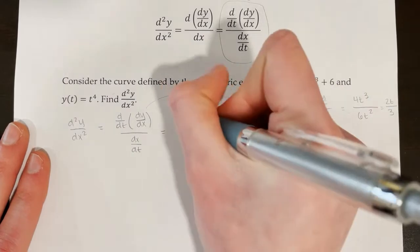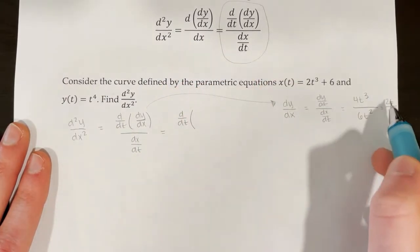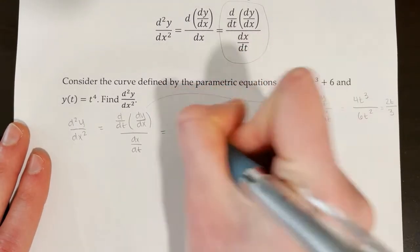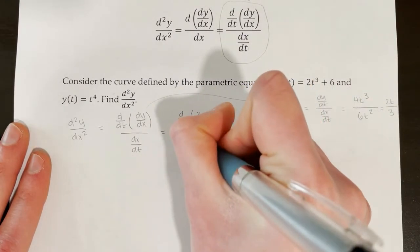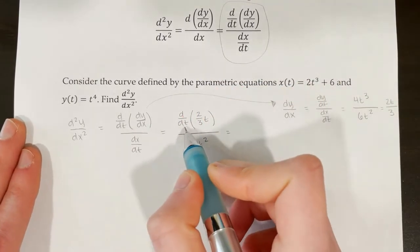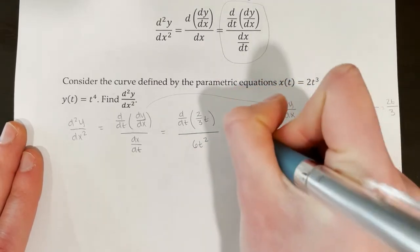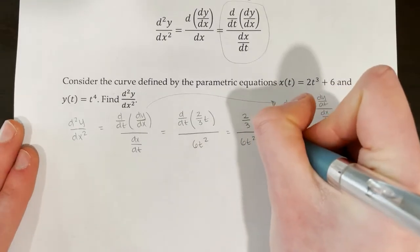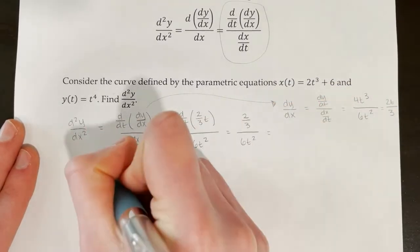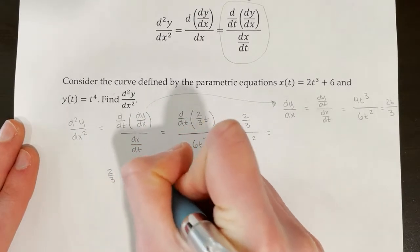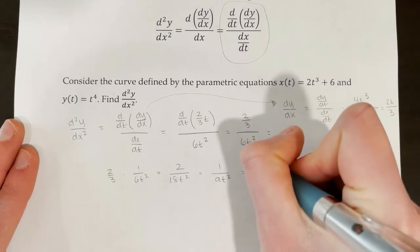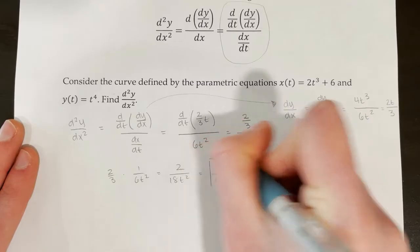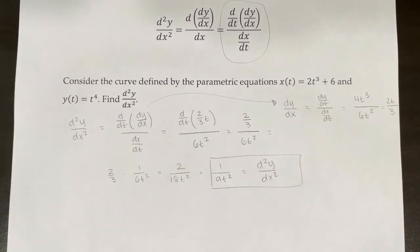This is what we plug back in for dy dx. So we're finding d dt of 2t over 3, written as 2/3 t, all over dx dt, which is 6t squared. The derivative with respect to t of 2/3 t is just 2/3, so we have 2/3 over 6t squared. That equals 2/3 times 1 over 6t squared, giving us 2 over 18t squared, or 1 over 9t squared. That's our second derivative, and plugging in a specific t value tells us about the concavity of the curve.